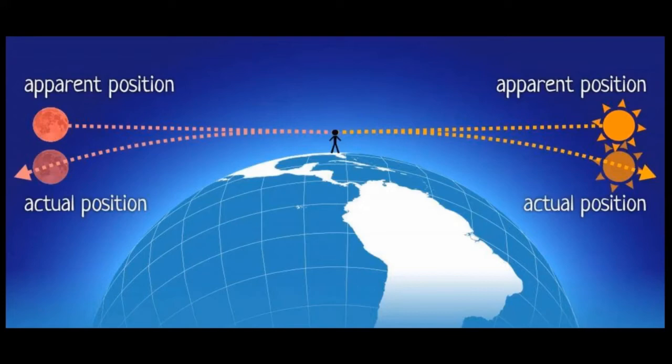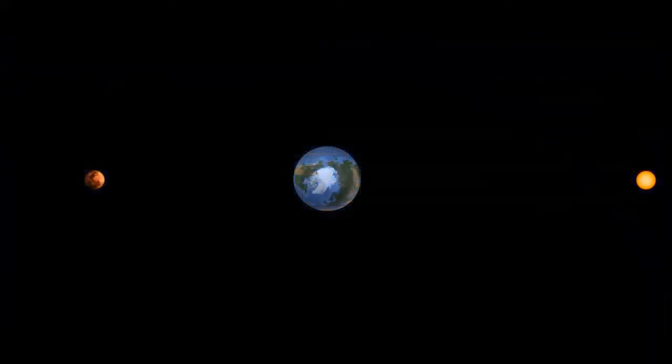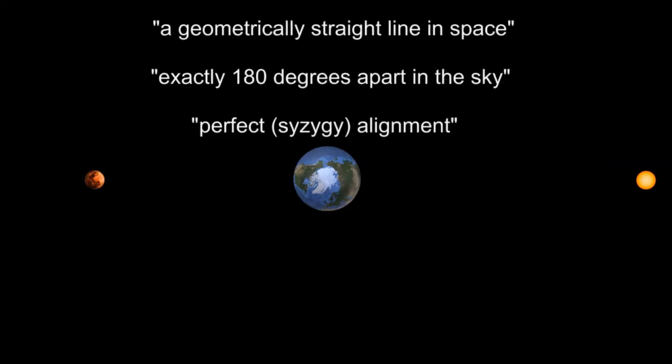Let me try to make this illustration at least a little closer to heliocentric's version of reality. So this is my not to scale version of the sun, earth and eclipsed peak new moon, and what that NASA article called a geometrically straight line in space, exactly 180 degrees apart in the sky, and a perfect syzygy alignment.